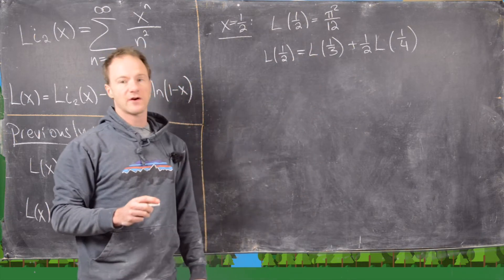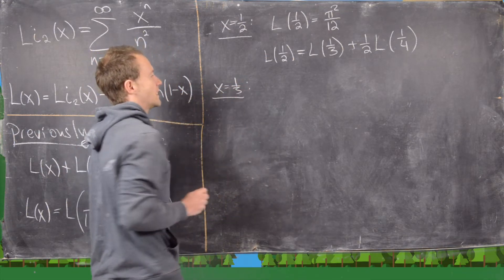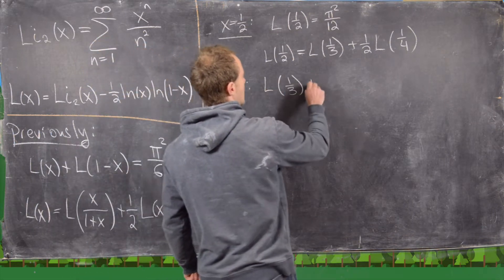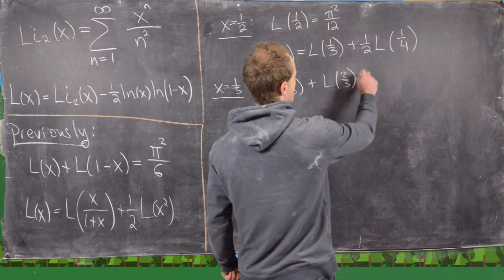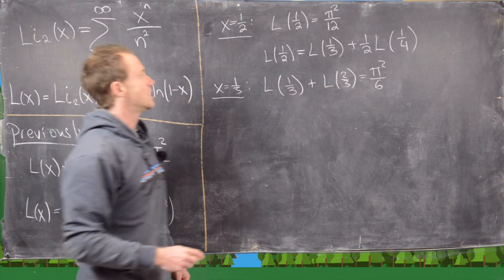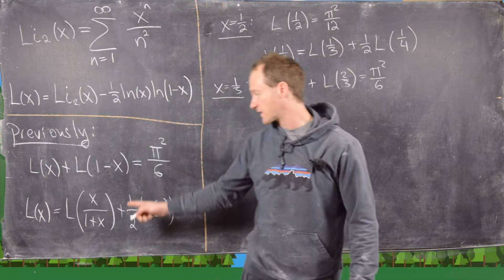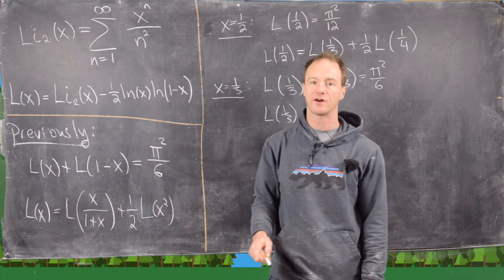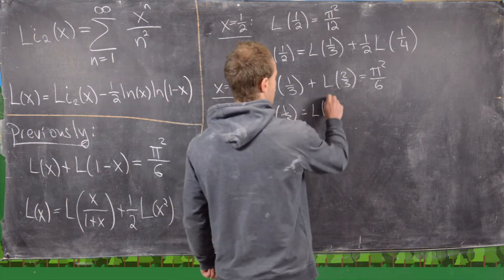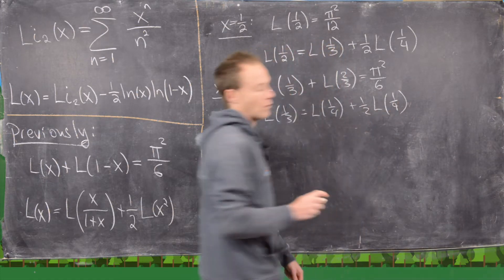The fact that we get a one third out of this means that maybe it'd be interesting to set x equal to one third and see what we can get. For the first functional equation, we'll get L of one third plus L of two thirds equals pi squared over 6. For the second one, L of one third equals one third over 1 plus one third — so one third over four thirds — giving us L of one quarter plus one half L of one ninth.